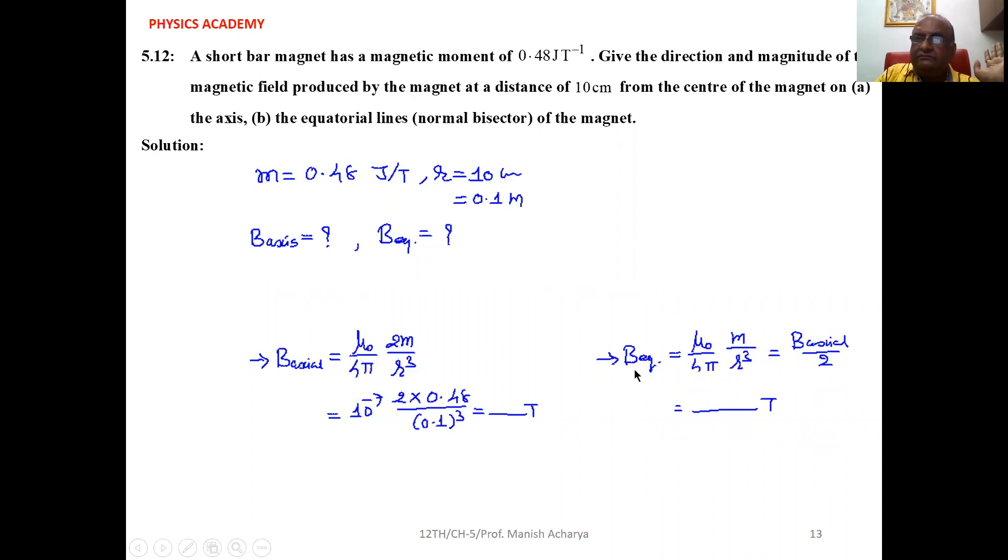Now for equatorial, B_equatorial is μ₀/4π times m/R³. If the position of the point is the same on the axis as well as on the equator, meaning R is the same, then we can see...